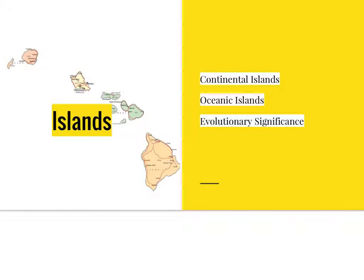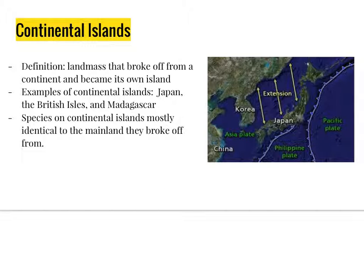Islands: continental islands, oceanic islands, and evolutionary significance. Big questions: Why are there different life forms found in different types of islands? Why are oceanic islands missing large groups of species? Why do oceanic islands have such unbalanced biotas? How do these observed patterns support the theory of evolution? Continental islands are defined as landmasses that broke off from a continent and became their own island. Examples include Japan, the British Isles, and Madagascar. Species on continental islands are mostly identical to the mainland they broke off from, because they broke off with most other species already intact.